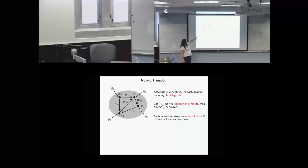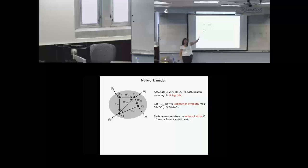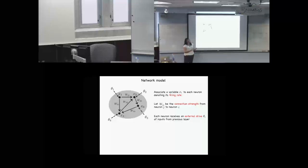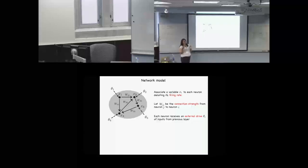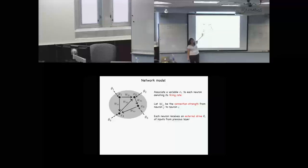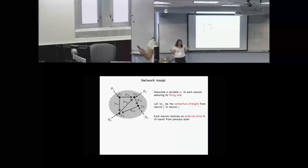The last ingredient is going to be these external drives. We're thinking within a single layer of a given network, but from outside layers there are inputs coming into these neurons. Connection strength is a proxy for the number of contact points of your synapse, or some measure of how strong the synaptic connection is — how strong the influence of neuron X3 is on neuron X4. You can think of it as a weighted graph.